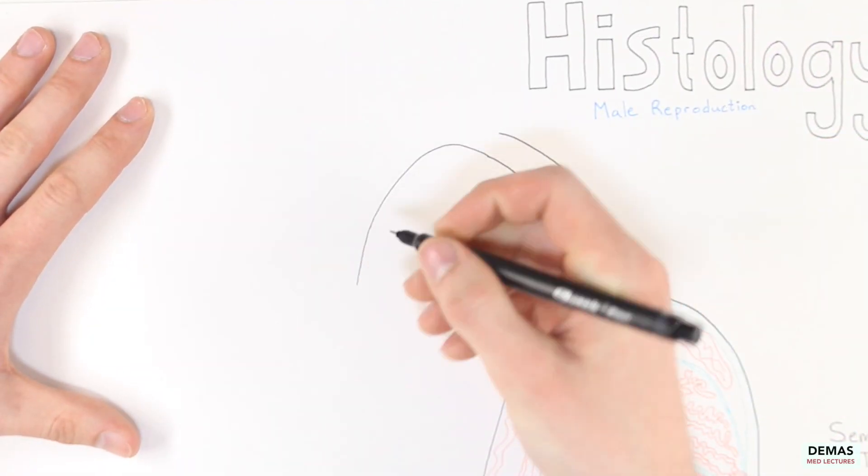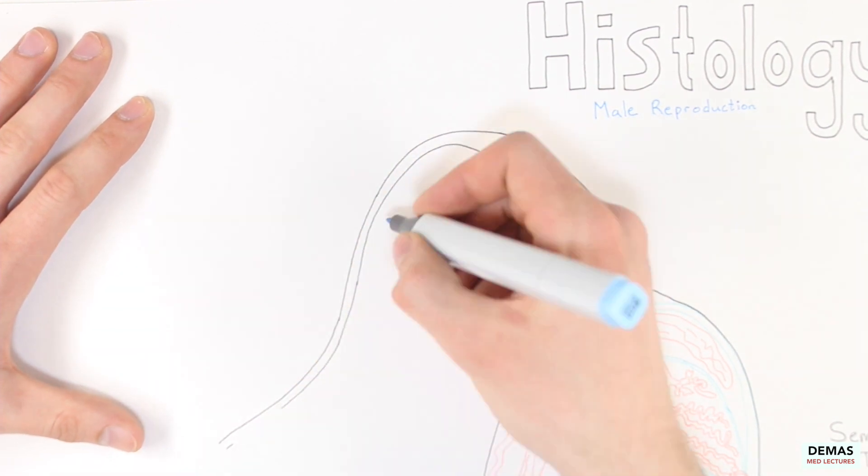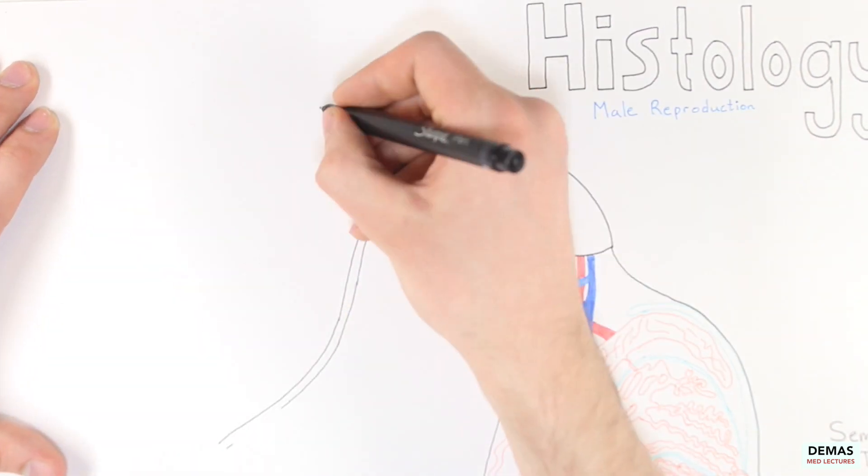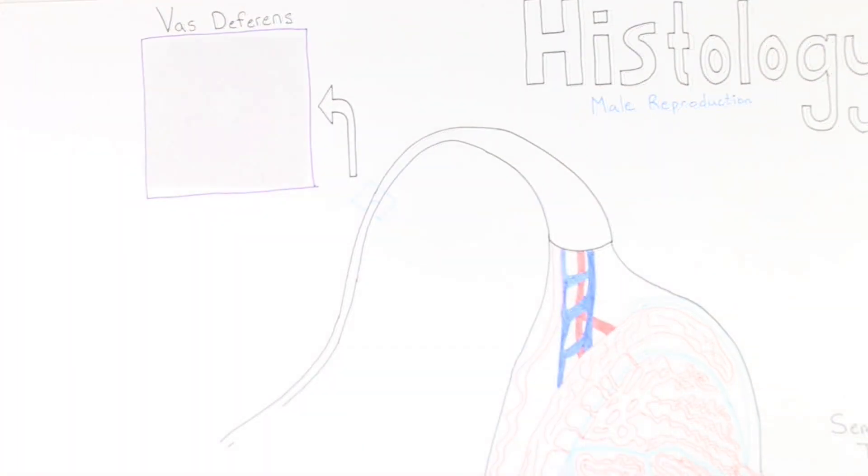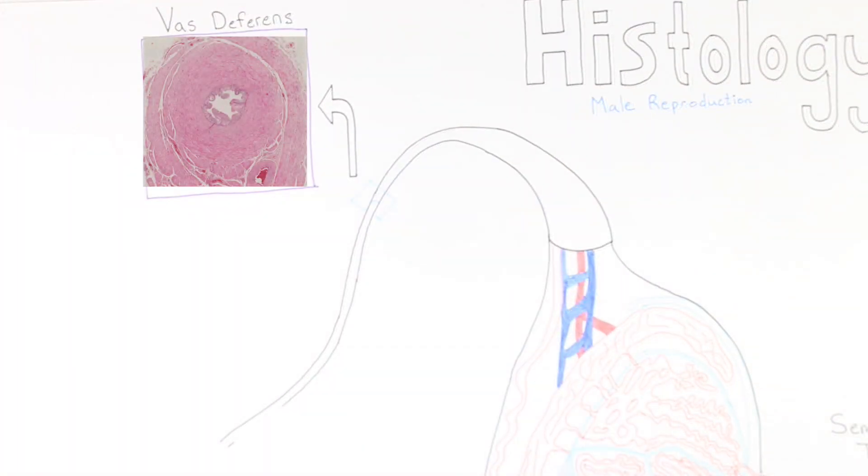During sexual stimulation, the sperm are called upon and travel through the remainder of the tract to the exterior of the body. The next part of the tract along this path includes the vas deferens. As you can see, the vas deferens is a muscular channel lined with pseudostratified columnar epithelium and also contains stereocilia. This tube contains smooth muscle that contracts to propel sperm forward.